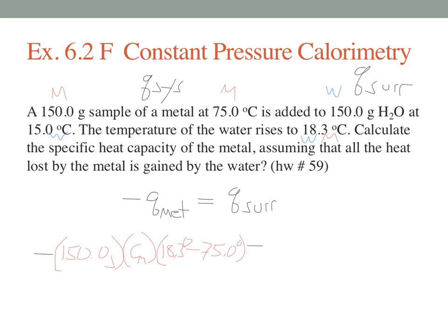And then we're going to set that equal to the water data. The water has 150 grams of water, the specific heat of water is 4.18 joules per gram per degree Celsius, and the temperature change of the water is 18.3 minus it starts out at 15 degrees Celsius.